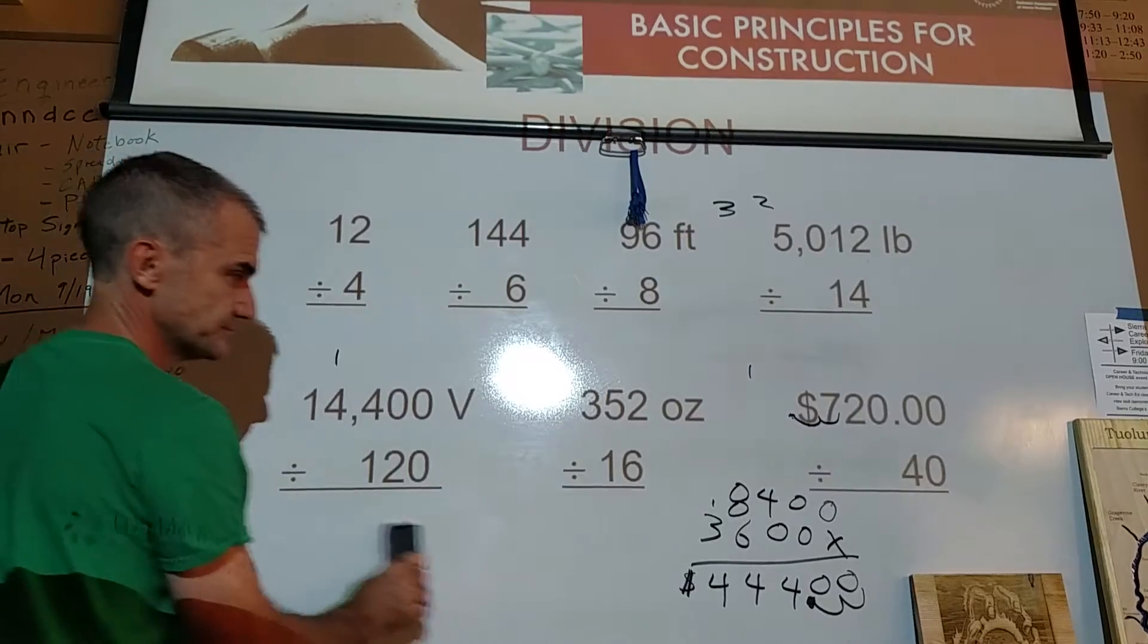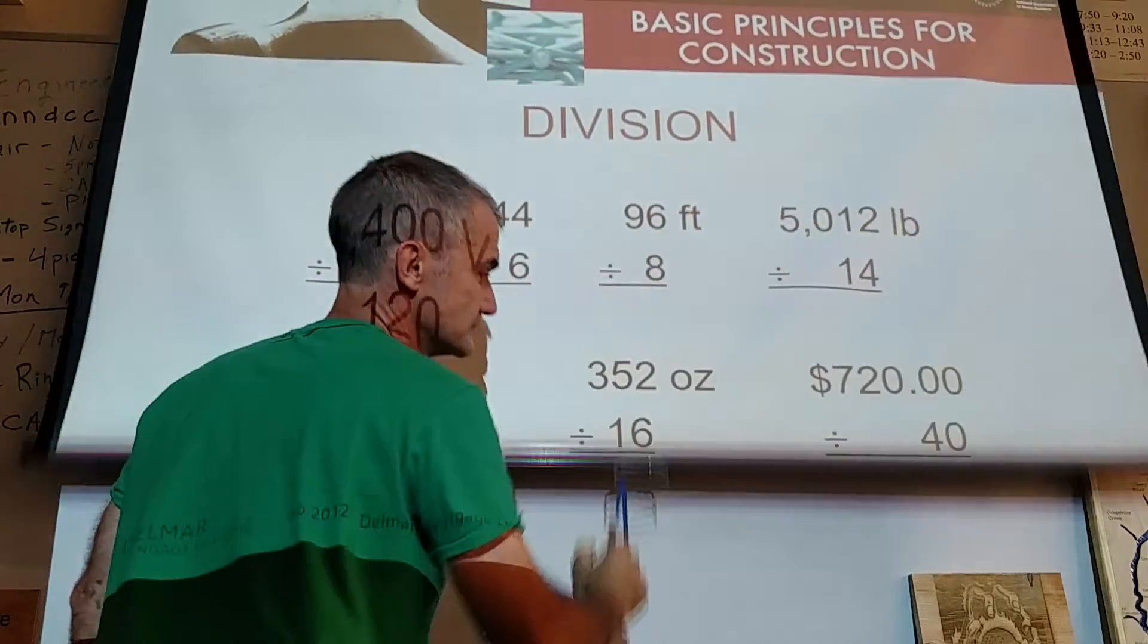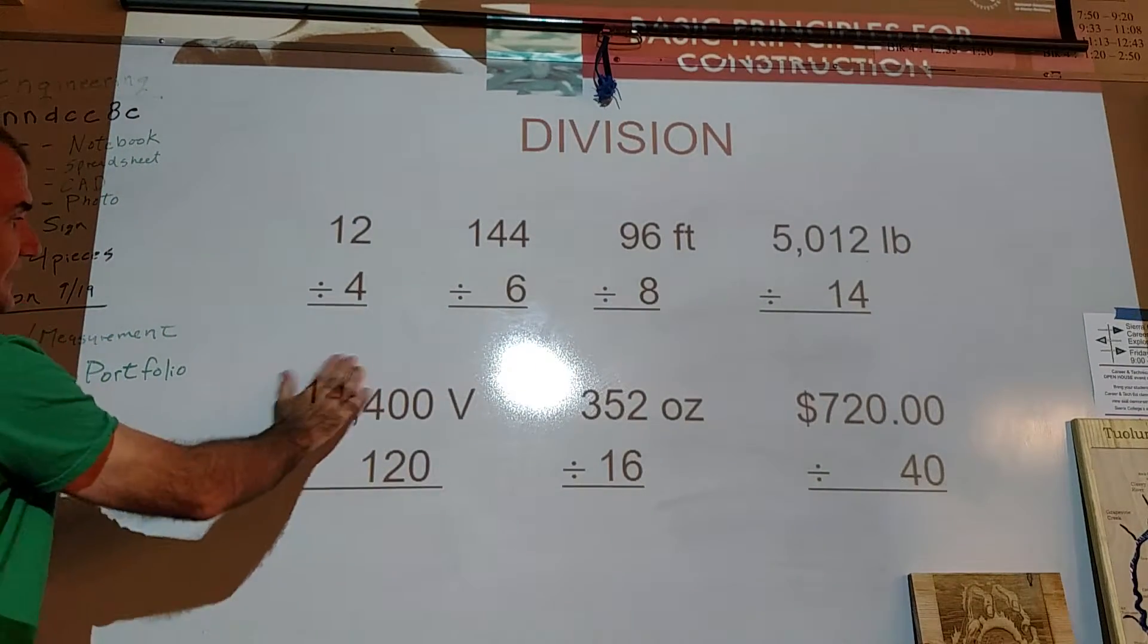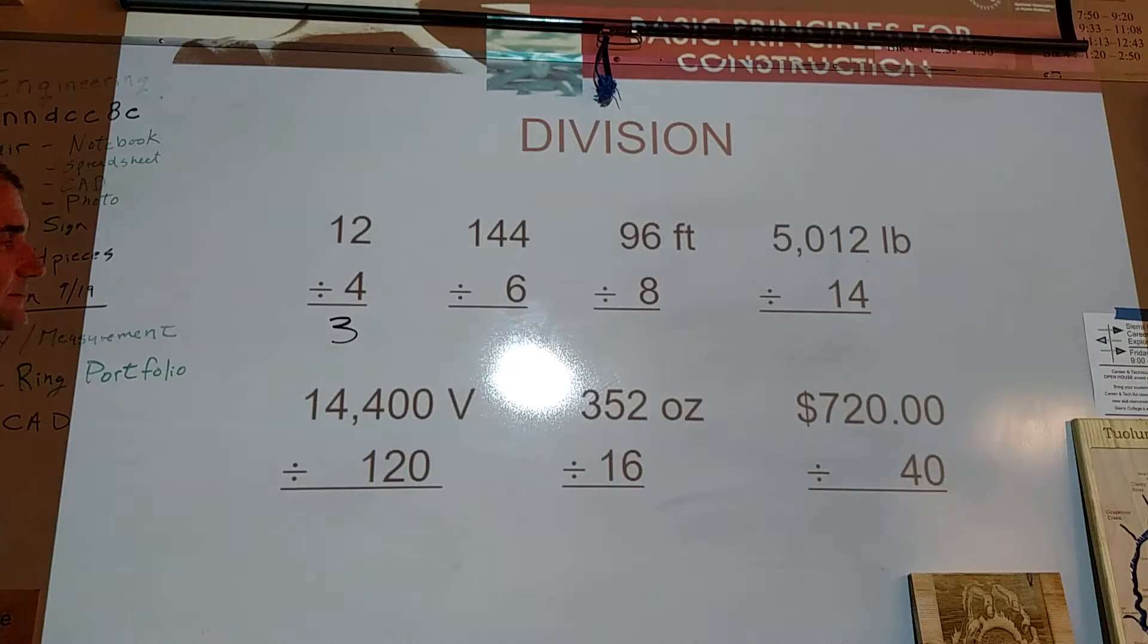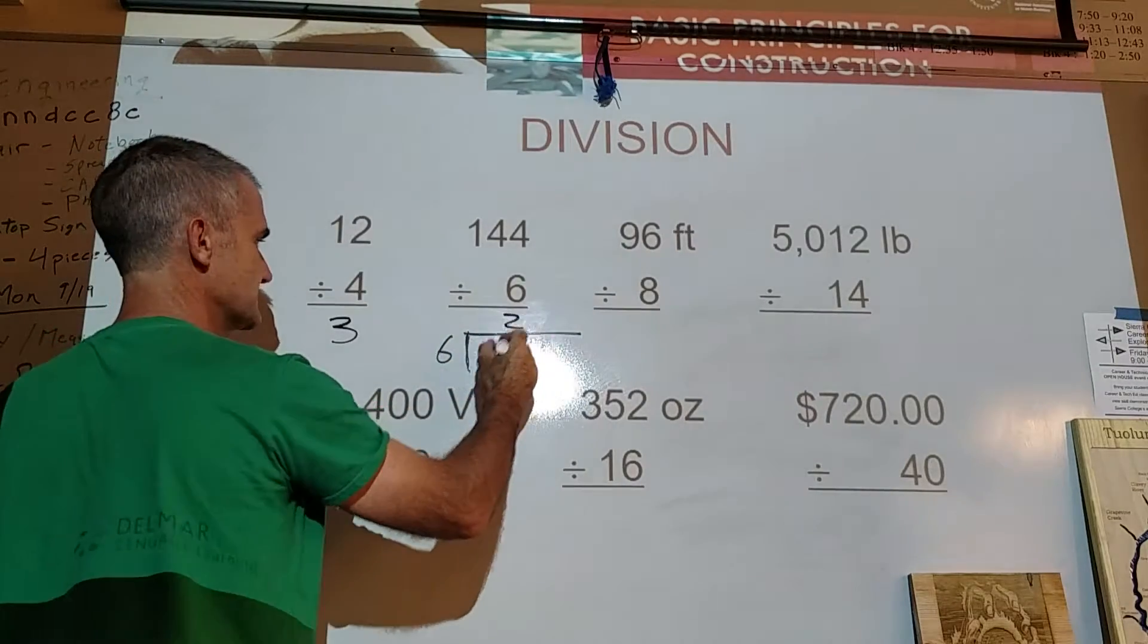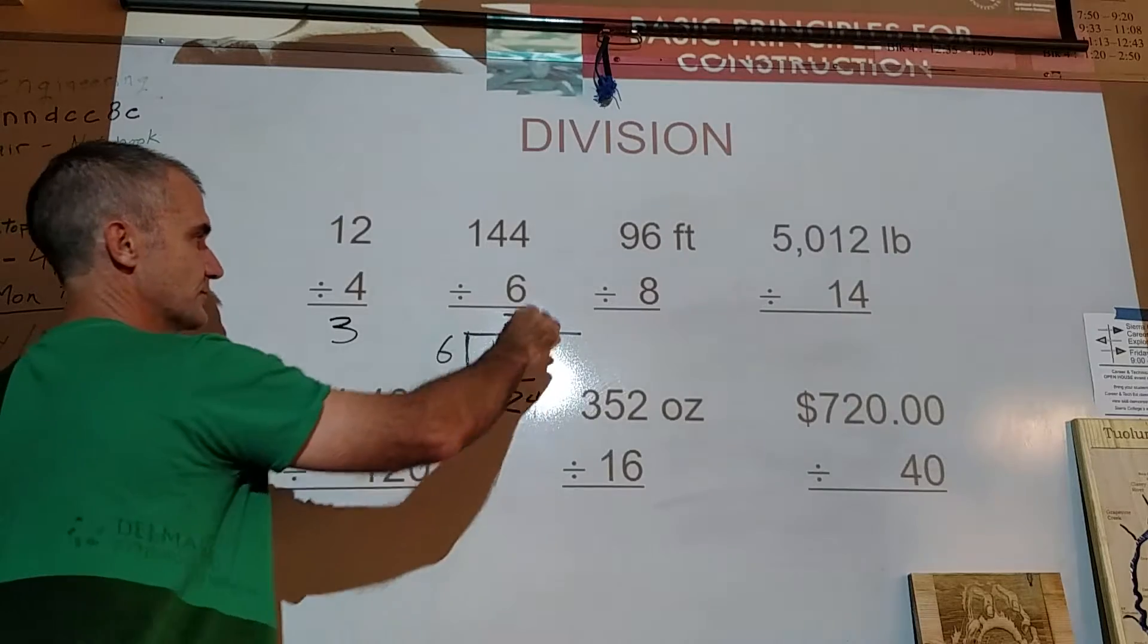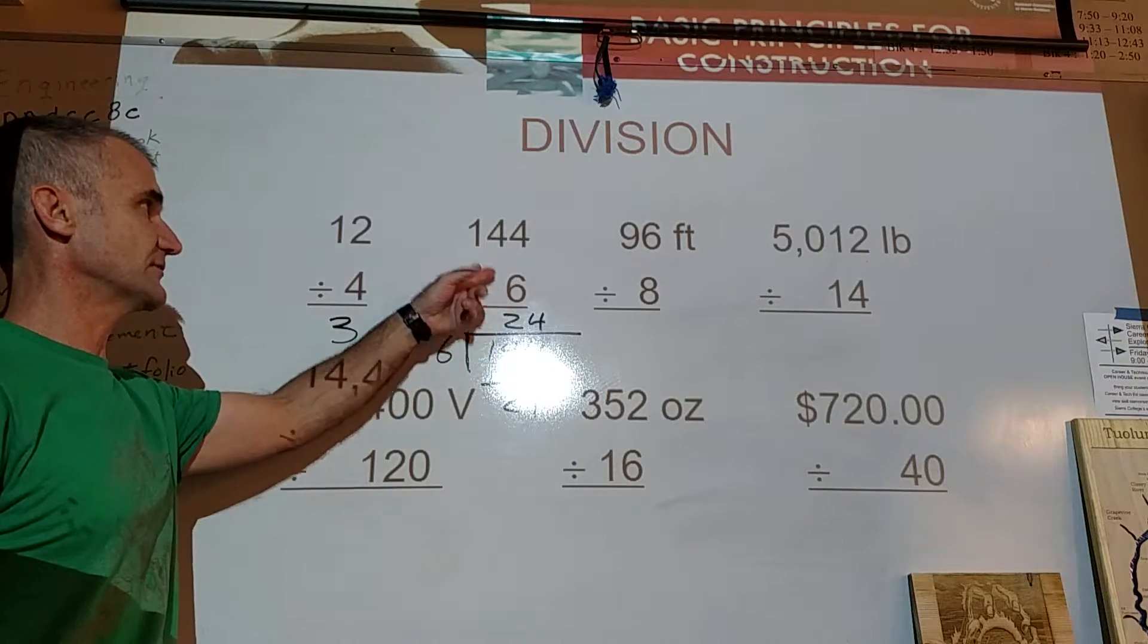Moving on to division. These are just kind of math facts I have to know. I have to know that 4 times 3 is 12. So 12 divided by 4 is equal to 3. There are no units. That's 144 divided by 6. The way I do this is I'm saying, 144, how many times does 6 go into 144? So 6 goes into 14 twice, gives me a 12. 14 minus 12 is 2. Bring down the next one, 4. 6 into 24, 4 times. So 144 divided by 6 is 24. Or what I'm saying is 24 times 6 is 144.